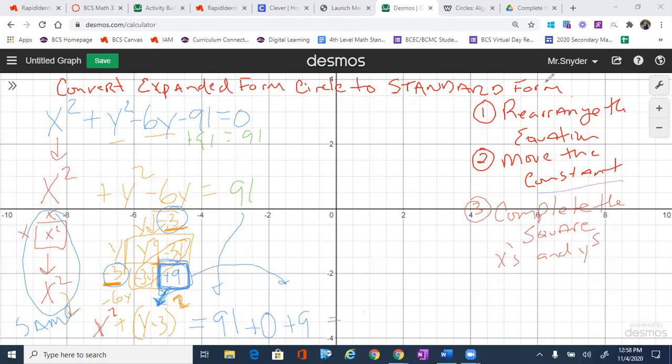So we rewrite our equation. X squared plus Y minus three squared equals to 91 plus zero plus nine, which is a hundred.